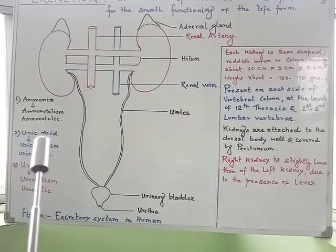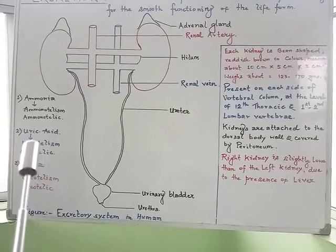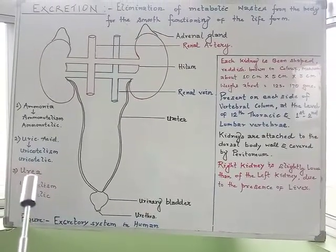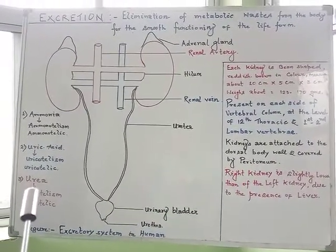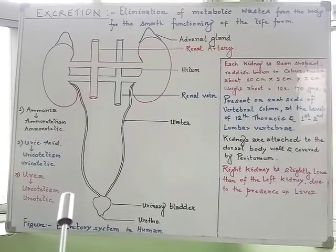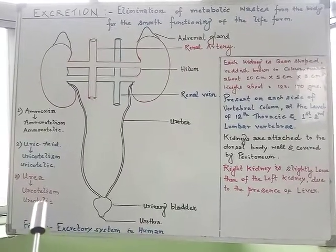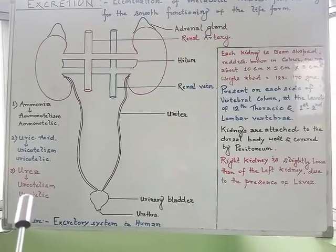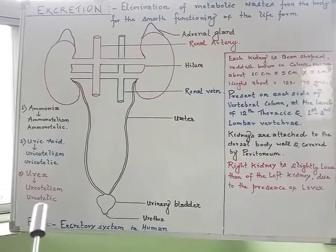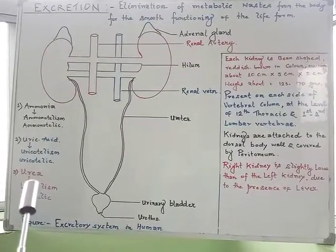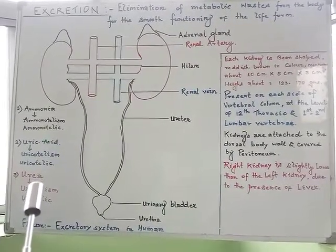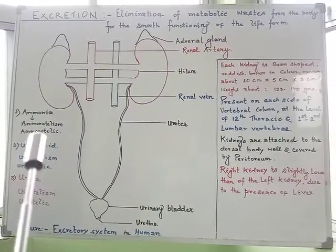The third group of animals forms nitrogenous waste in the form of urea. The animals falling under this category are called ureotelic animals — for example, all mammals, adult amphibians, and cartilaginous fishes. As urea is less toxic compared to ammonia, its removal also requires water but less compared to ammonia.